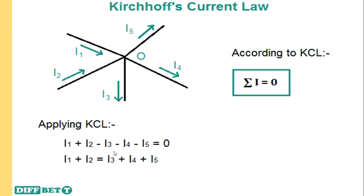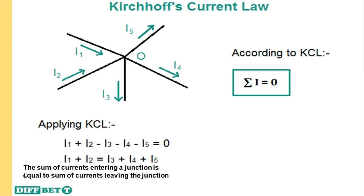According to Kirchhoff's Current Law, the sum of all currents at a junction must be equal to zero. By equating the equation, we get that I1 plus I2 — the sum of current entering — is equal to the sum of current leaving. This can also be stated as: the sum of all currents about a junction must be equal to zero.